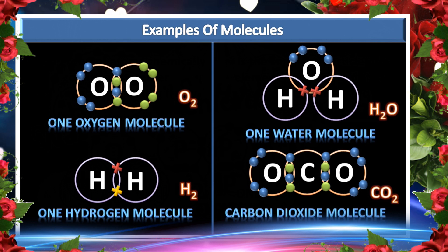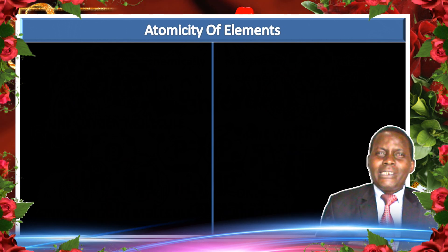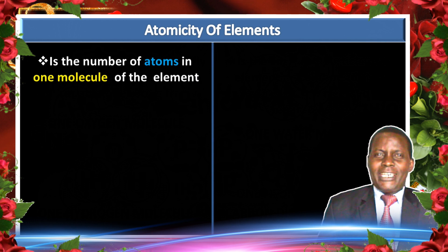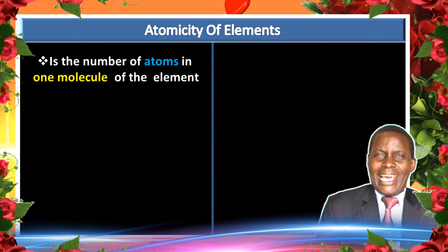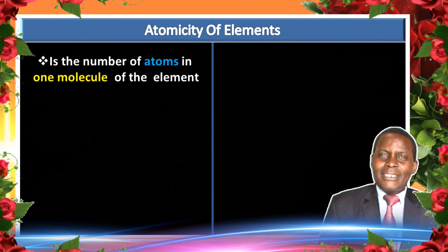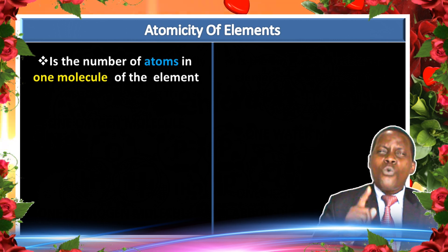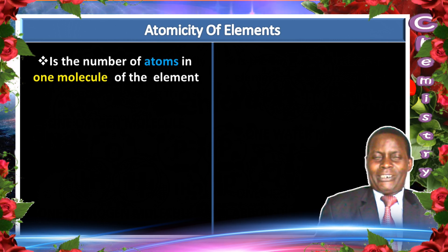This brings us to what we call atomicity. Atomicity is the number of atoms in one molecule of an element.